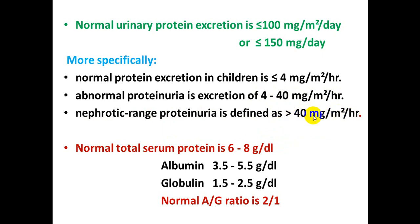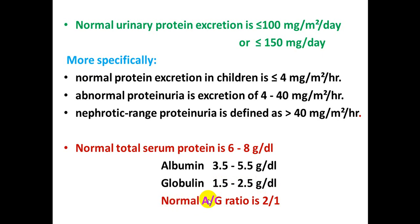Nephrotic range proteinuria is defined as more than 40 mg per square meter per hour. Normal total serum protein is 6 to 8 g per deciliter. Serum albumin is 3.5 to 5.5 g per deciliter, and serum globulin is 1.5 to 2.5 g per deciliter. The normal albumin-to-globulin ratio is 2 to 1.